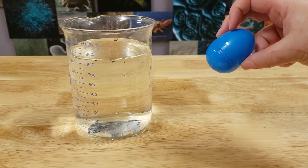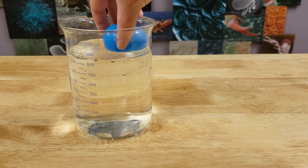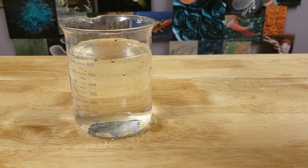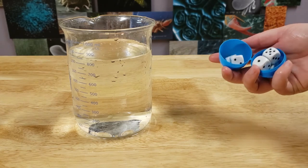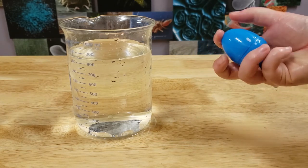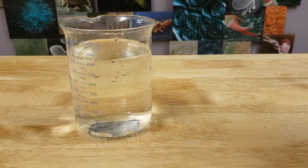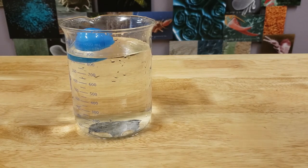For the base of my diver, I'm using a plastic egg that does float at the top of the water. Maybe if I try to fill my egg diver with something heavy like this dice, it won't float at the top anymore. Nope, it looks like the diver is still too light and wants to float at the top.